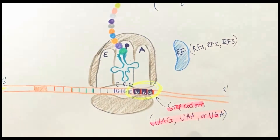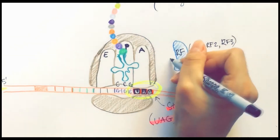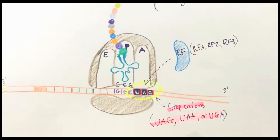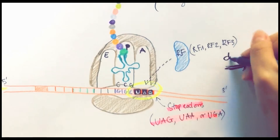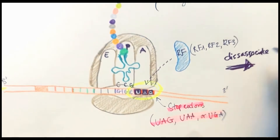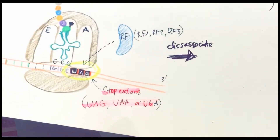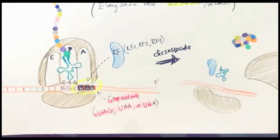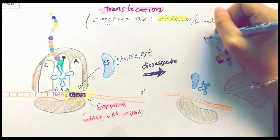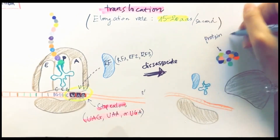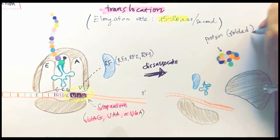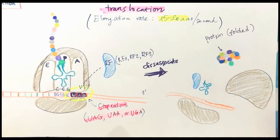The release factors RF1, RF2, and RF3 bind to the ribosome. Binding of these release factors catalyzes the cleavage of the bond between the polypeptide and the tRNA. The polypeptide is released from the ribosome, and then the ribosome dissociates into subunits and is ready for a new round of translation.